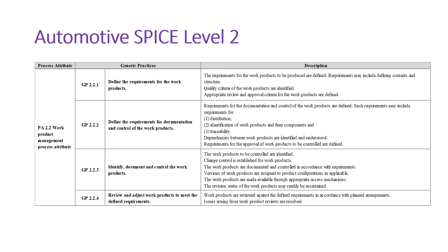So looking at the entire flow: first you need to define the requirements of the work products, then you need to document and control them, then you identify, document, and control the work products, and finally you review and adjust — revise the work products based on fulfilling the particular requirement. This is the difference between Level 1 and Level 2.